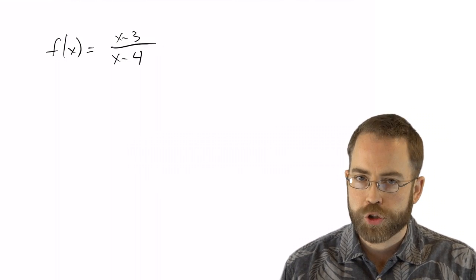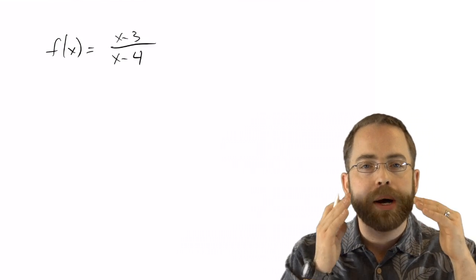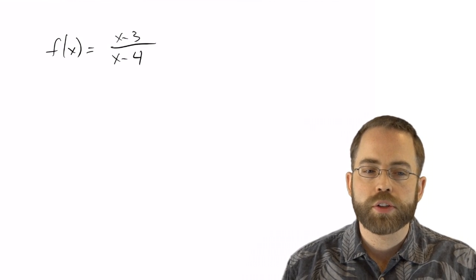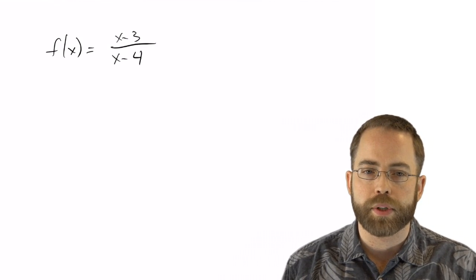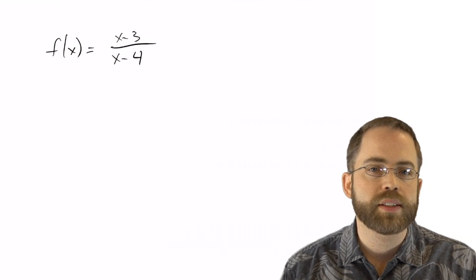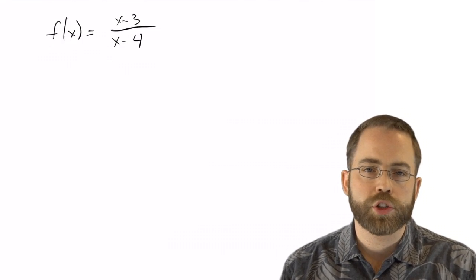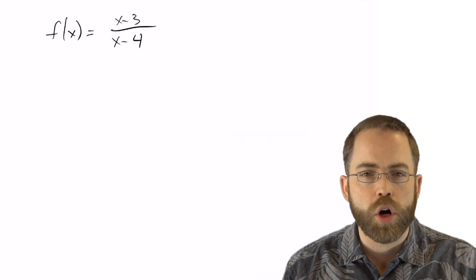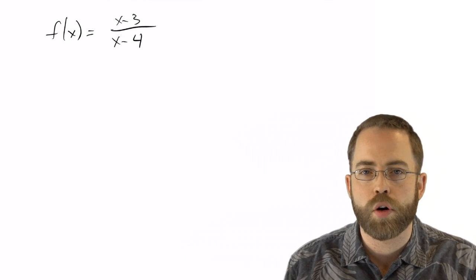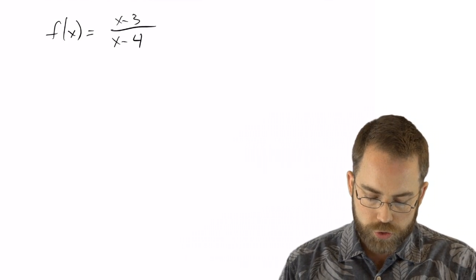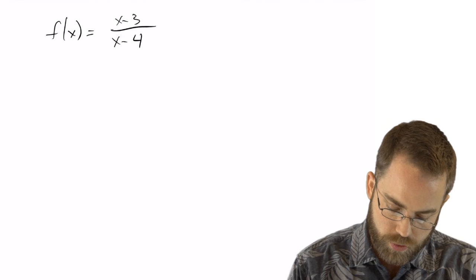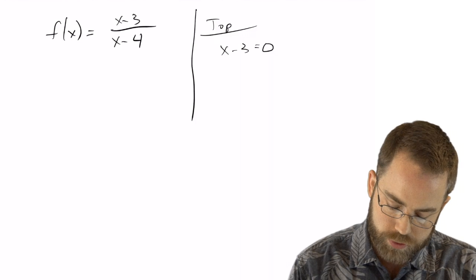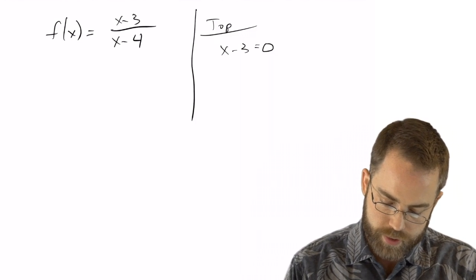This is a rational function, and rational functions are polynomials over polynomials. There are several things we need to think about. First of all, when does the top equal zero? Because any fraction with a zero in the numerator is going to equal zero overall — zero over three, zero over four, zero over a billion, they're all zero. So when does the top equal zero? That happens at three.